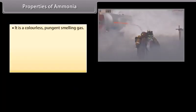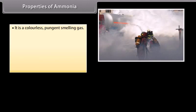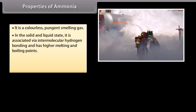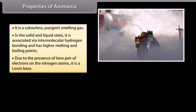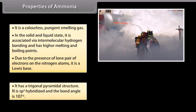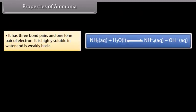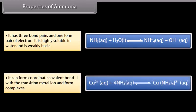A pressure of above 200 atm, a temperature of 700 K, and the presence of a catalyst favour the formation of ammonia. Ammonia is a colourless, pungent-smelling gas. In the solid and liquid state, it is associated via intermolecular hydrogen bonding and has higher melting and boiling points. Due to the presence of a lone pair of electrons on the nitrogen atom, it is a Lewis base. It has a trigonal pyramidal structure; N is sp3 hybridised and the bond angle is 107°. It is highly soluble in water and is weakly basic.